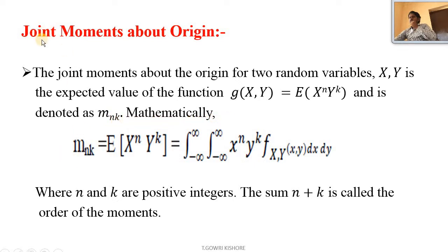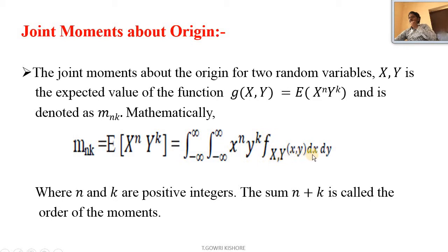The joint moment about the origin can be represented as m n k equal to expectation of x power of n into y power of k, equal to integral from minus infinity to infinity, integral from minus infinity to infinity, x power of n into y power of k into f(x, y) dx dy.